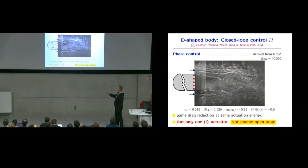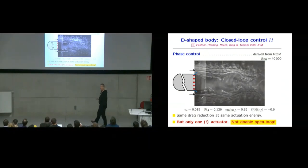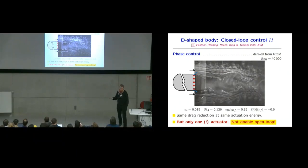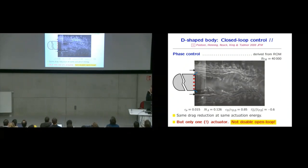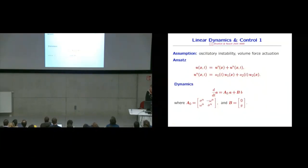Now there's one application where you cannot do anything with open loop control. Suppose, for instance, one of the actuators fails. You can only actuate on the lower side. So in this case, I can tell you open loop control will not work. And you need to do some type of closed loop control. You get the same drag reduction, the same energy. And again, this is not doable open loop. So this is a motivation why feedback is beneficial for, for instance, wake stabilization.